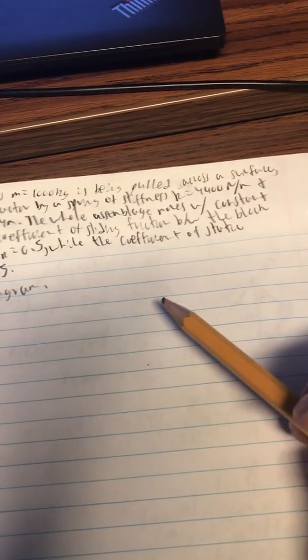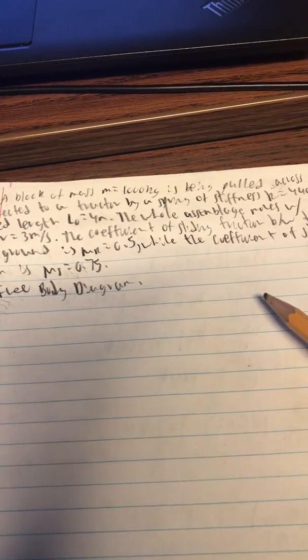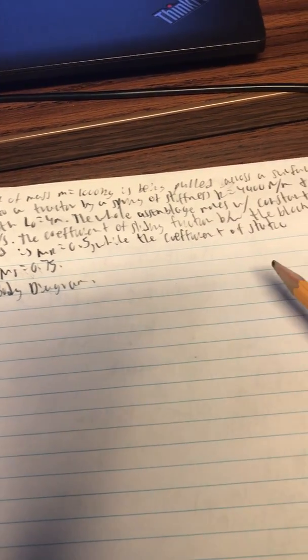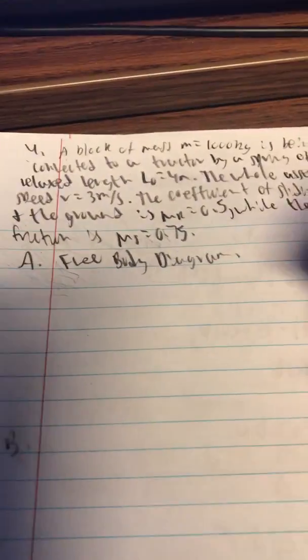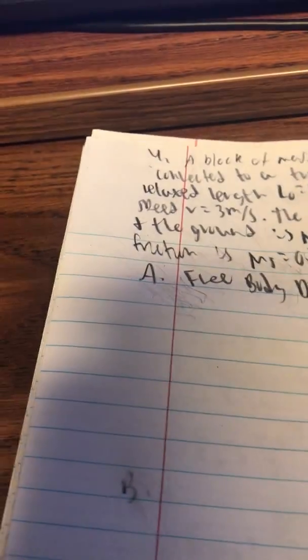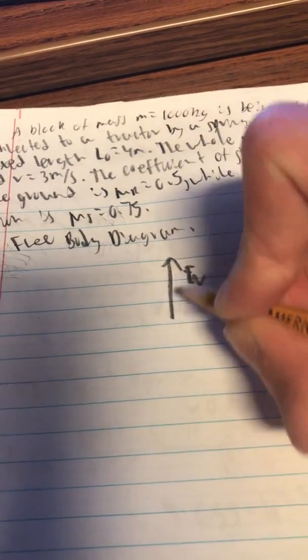The coefficient of sliding friction between the block and the ground is μₖ equals 0.5 while the coefficient of static friction is 0.75. So first we're going to draw the free body diagram.